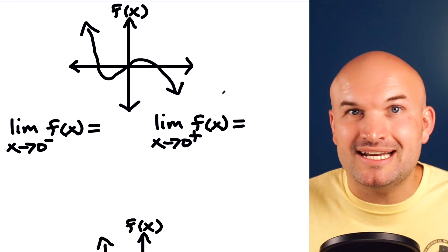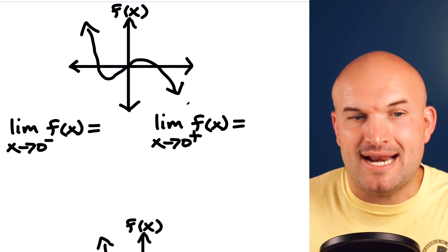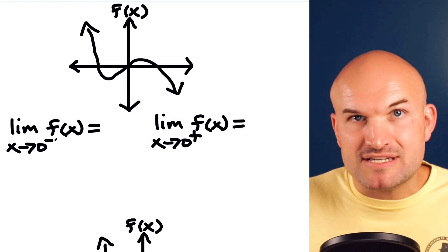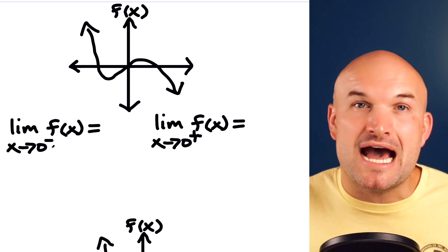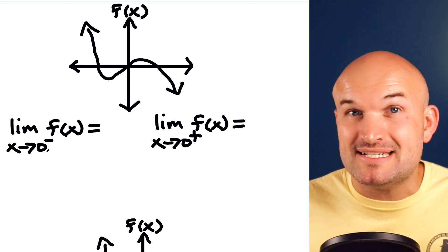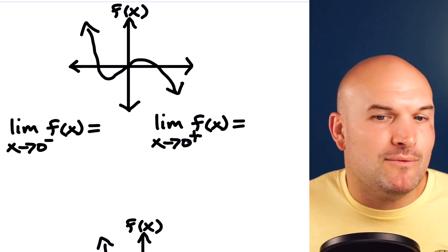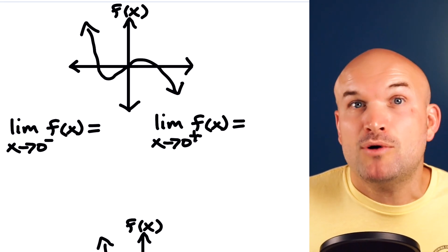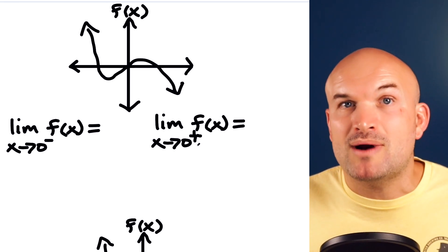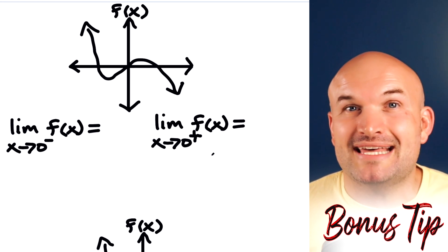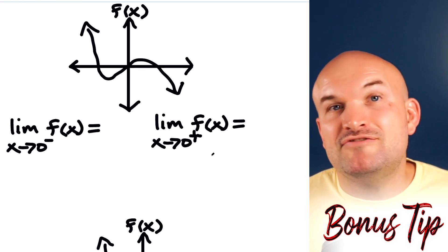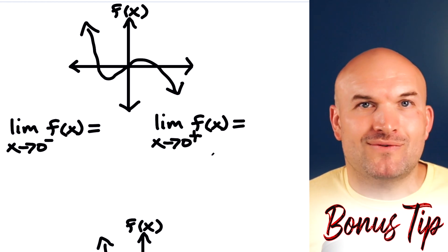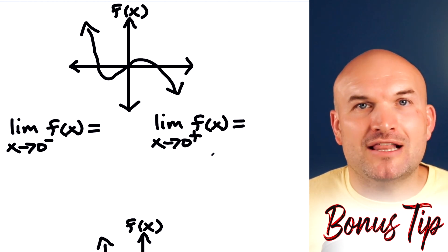The notation is how we separate the left and right hand limits. When x approaches zero with a little negative symbol, I want to find the value the graph is approaching from the left. When I have the little positive sign, that means from the right. Bonus tip: use your left hand to follow the graph for the left hand limit, and your right hand for the right hand limit.